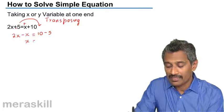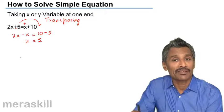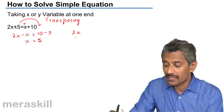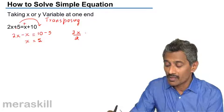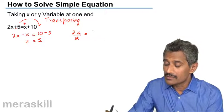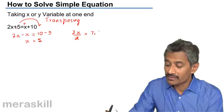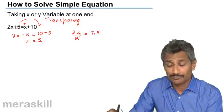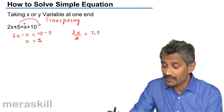So you have x = 5. Let's take another example. Suppose you have 3x/2 = 7.5. Now you need to separate this x.